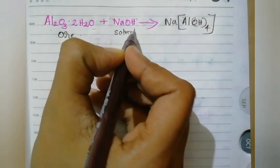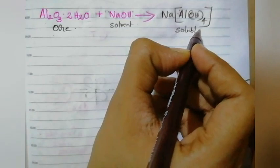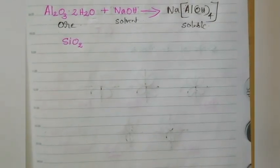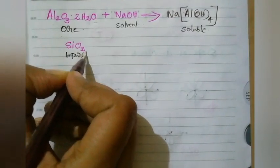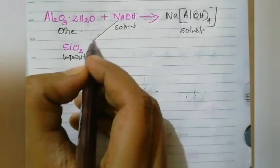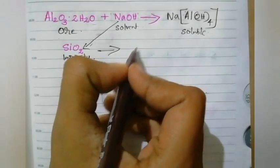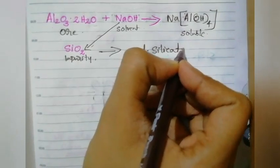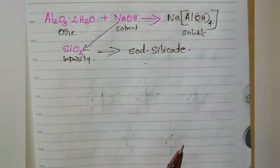Bauxite (Al2O3·2H2O) is dissolved in NaOH, and it forms a soluble coordination compound. The SiO2 impurities also dissolve in NaOH and form a soluble complex called sodium silicate. However, titanium oxide does not form any soluble complex in the presence of sodium hydroxide — that means it forms a solid impurity, i.e., the sludge.